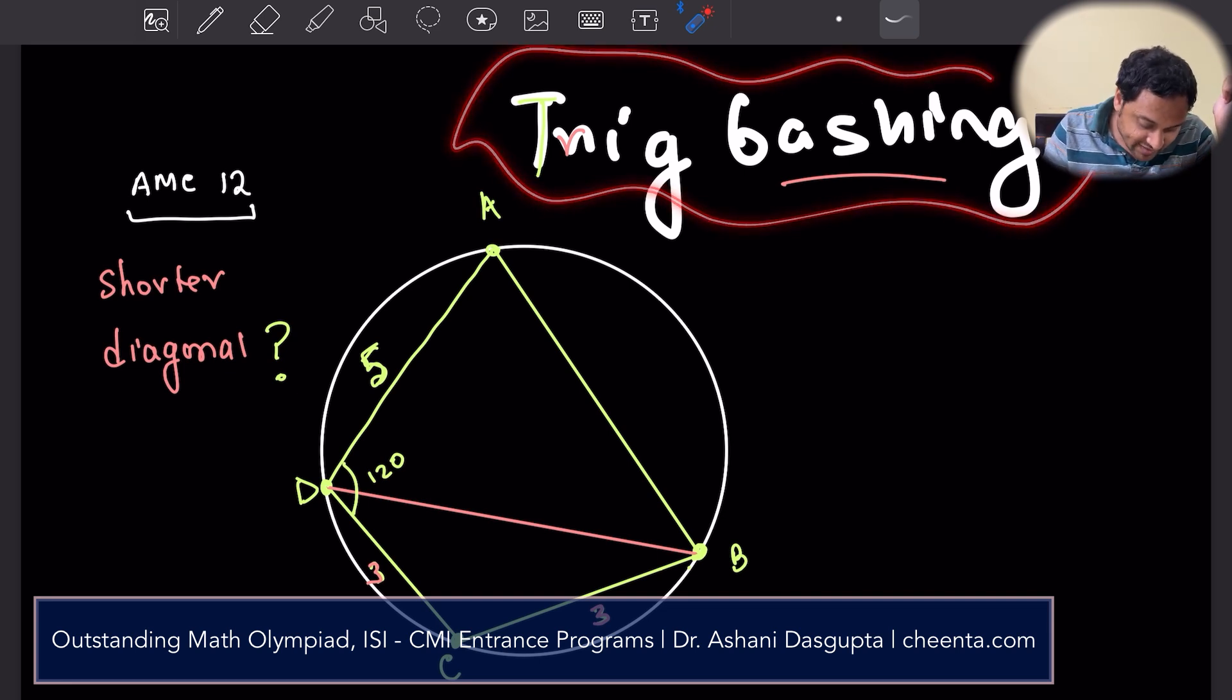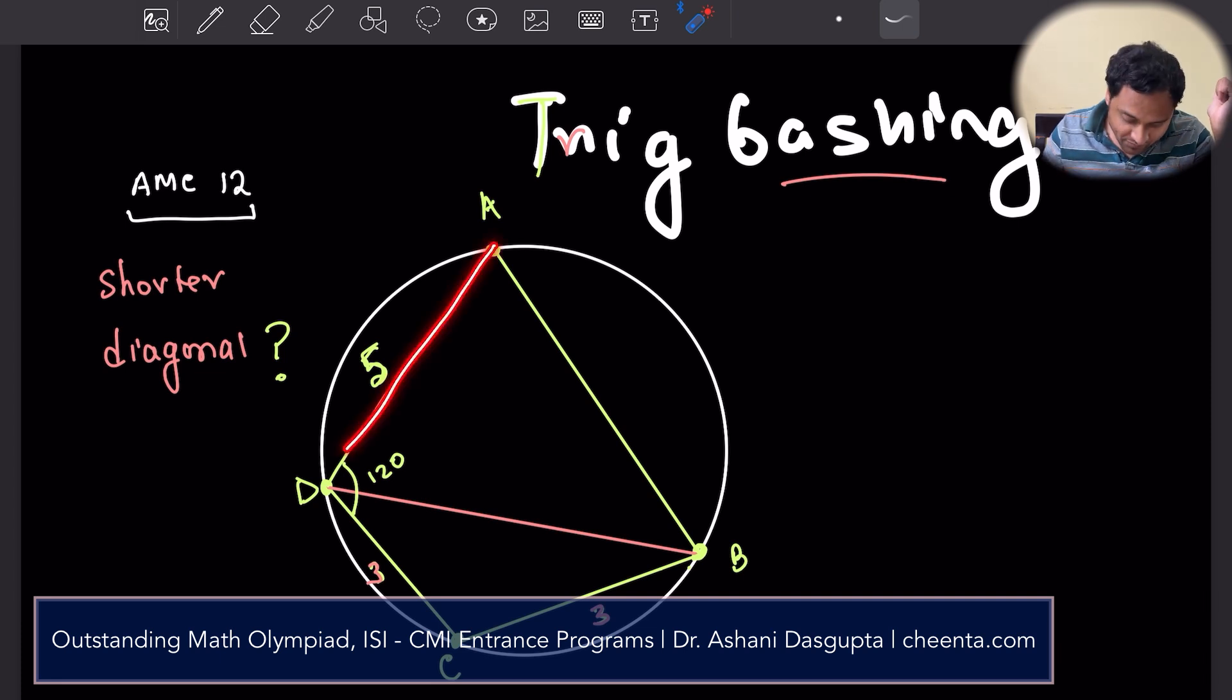It says that we have a cyclic quadrilateral ABCD. These two sides are equal, both of them are three centimeters long, and AD is five centimeters long. And this angle is 120 degrees. That's the given information. You can draw the picture, pause the video or draw the picture to follow along. The question is to find the shorter diagonal of this cyclic quadrilateral.